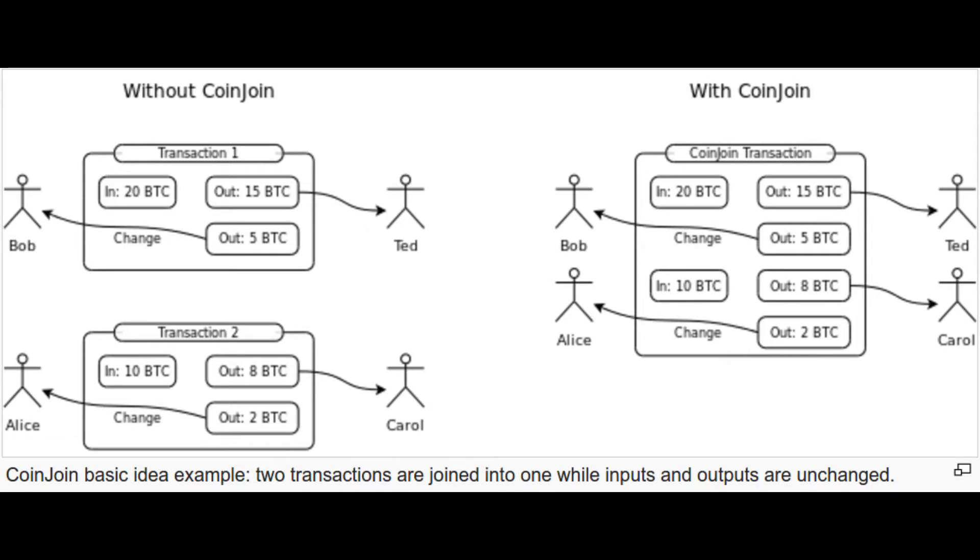CoinJoin helps address that by pooling together multiple participants' inputs or coins into a single transaction. You can see this very simply visually in this kind of cartoon version of it. Essentially what this does is it severs the link between the inputs — the different coins that participants are contributing to this transaction — and the outputs. So it becomes very difficult to know the ownership of these different resulting outputs and connect them back to the inputs.